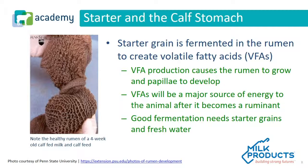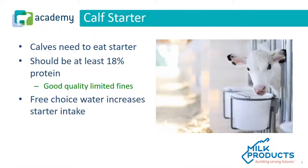Good fermentation needs starter grains as well as fresh water. Calves need to eat the starter — it needs to be palatable, it should be at least 18% protein, and it should be good quality with limited fines. In addition to a starter, clean, free-choice water needs to be available, as this increases starter intake.